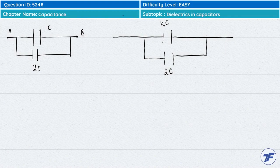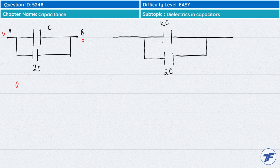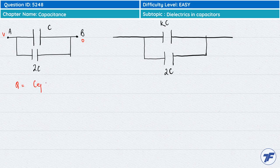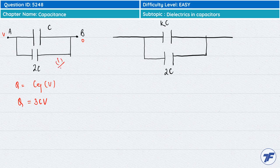So, C and 2C are joined in parallel at V potential, and the total charge stored is C equivalent into applied potential. C equivalent is 3C and applied potential is V, then the charge stored in this system is 3CV.